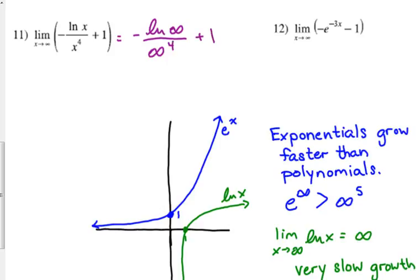Now, this time I am keeping the plus 1, and it will make sense here in a minute. So, the natural log of infinity, we said, is approaching infinity just very slowly.